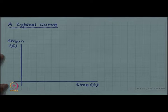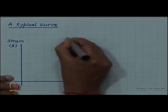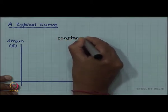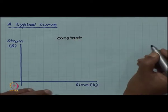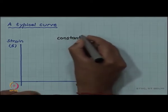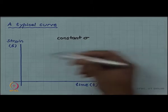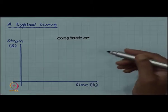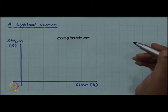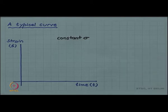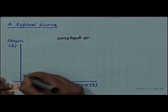The results of creep test is usually plotted as a creep curve where we plot strain as a function of time because we are keeping the stress constant. So, unlike the stress strain diagram which we had before, we have a strain time diagram because it is a continued plastic deformation as a function of time. So, if you plot strain as a function of time, you get what is called a creep curve.